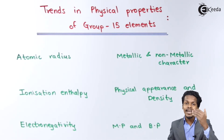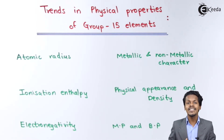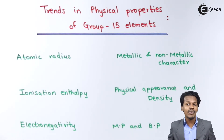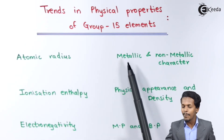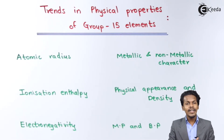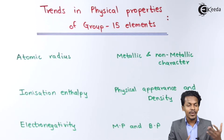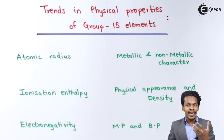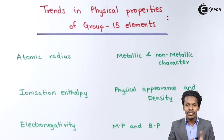From nitrogen to bismuth, electronegativity decreases down the group. Now let me talk about the metallic and non-metallic character of group 15 elements. The metallic character of group 15 elements is comparatively less than that of group 14 elements, due to atomic size, nuclear charge, and shielding effect.